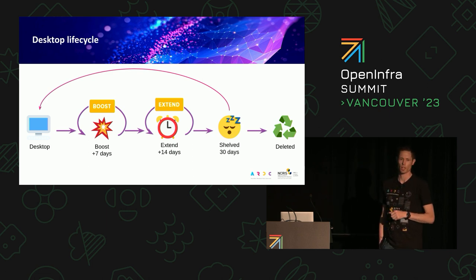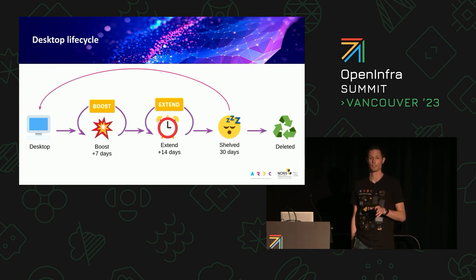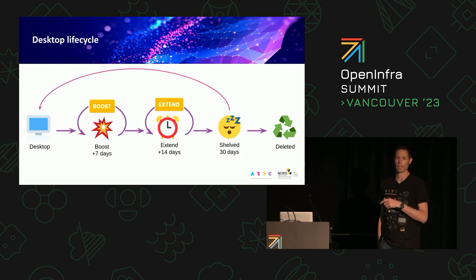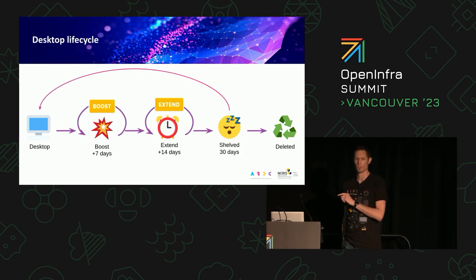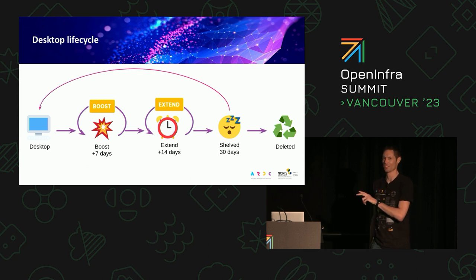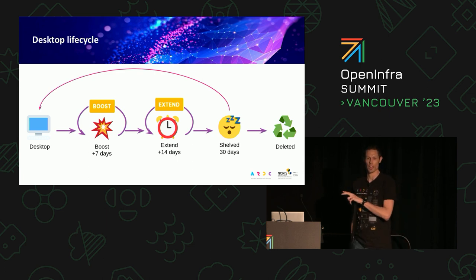The shelved state means the instance is shut down and deleted, but the volume stays around. That's the advantage of decoupling the instance from the volume — we can manage those resources independently. If it's in the shelved state for 30 days, we delete the volume and clean up. We tell users that, but actually we archive the volume because researchers often come back and say they needed something from months ago. If users opt to delete their own desktop, then it does actually get deleted.